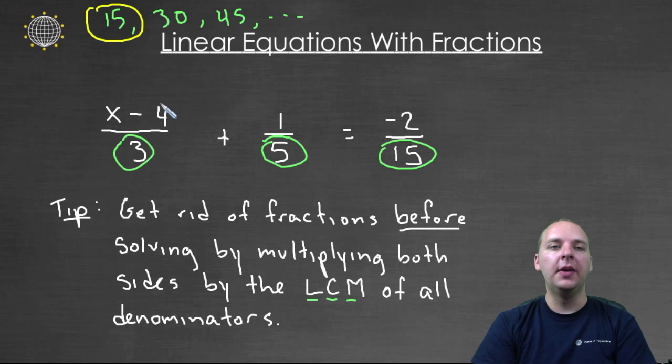If fifteen, the first number, was not the least common multiple, then you would mark it out, and you would keep going with the next number, and the next number, constantly checking to see if it is a multiple of everybody. But we get kind of lucky with this example that it's our very first one.